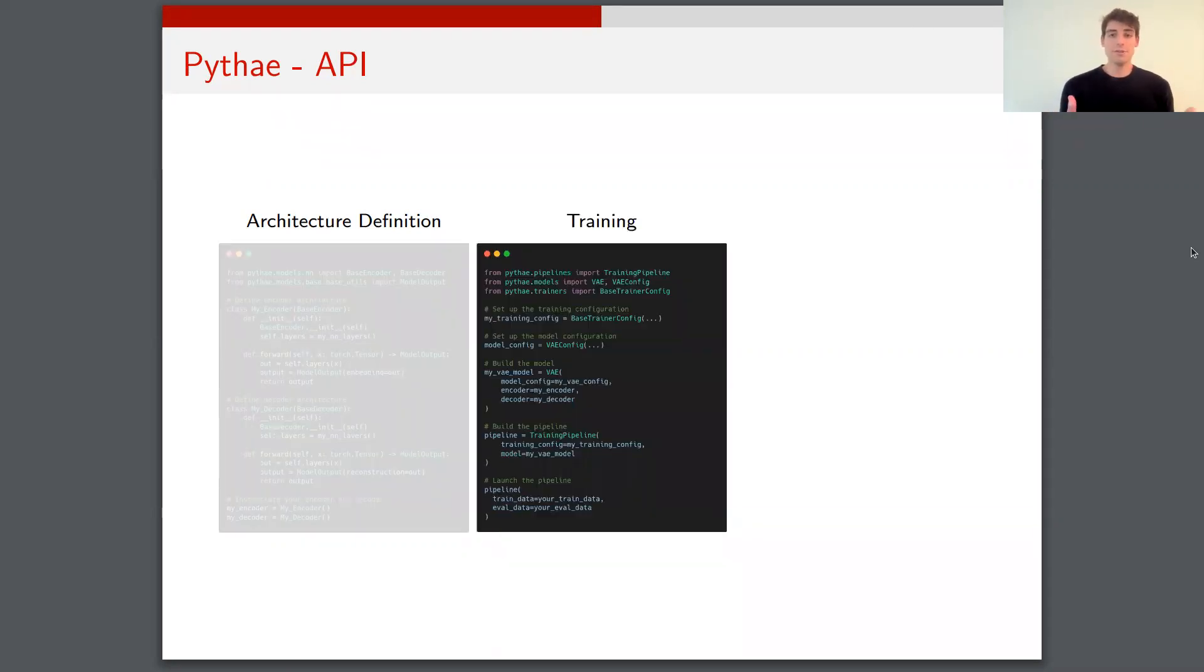Then I instantiate those classes and I can launch a training. To launch a training, different things. So the first thing that I need is to define a training configuration. This is basically where I specify the number of epochs, the learning rate, and the batch size that I want to use. Then I define a model configuration, here a VAE configuration, and I can instantiate my VAE. So to instantiate it, I pass the model configuration as argument, but I also pass the encoder and decoder that I've just built before. Then I can instantiate a training pipeline with the training configuration and the model, and I can launch the training pipeline on my own data.